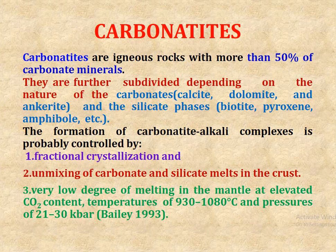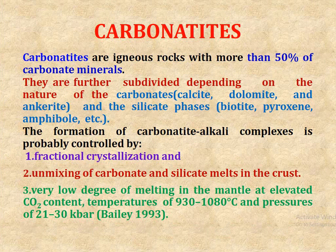Now, carbonatites. Carbonatites are igneous rocks with more than 50% carbonate material. They are further subdivided depending on the nature of the carbonate, which may include calcite, dolomite, ankerite, and silicate phases such as biotite, pyroxene, and amphibole. The formation of a carbonate-alkaline complex is probably controlled by fractional crystallization and unmixing of carbonate and silicate melt in the crust.